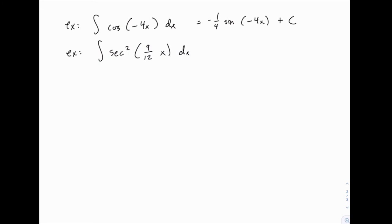And if you look back at your basic integrals list, the derivative of the tangent function is secant squared. So the integral of secant squared is the tangent function. So this should just be the tangent of the same function, nine-twelfths x. And then we have to adjust by dividing by that coefficient of x.